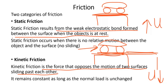Static friction occurs when there is no relative motion — like when the car is just parked — between the object and the surface. For kinetic friction, it remains constant as long as the normal load is unchanged, meaning as long as the object is in motion, the kinetic friction remains constant. Note that static friction has a higher frictional bond than kinetic friction.